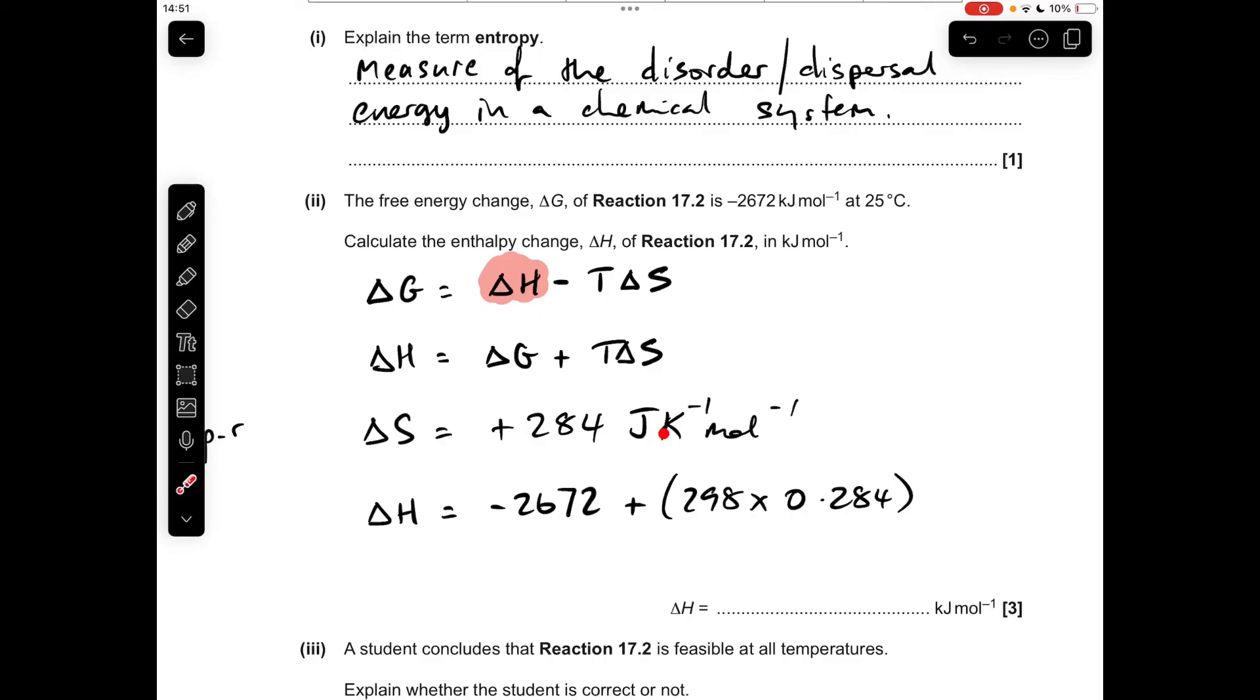So we've got to divide this by a thousand, so that's why it's 0.284 there. So ΔH comes out at -2587 kilojoules per mole.